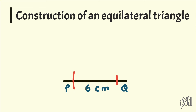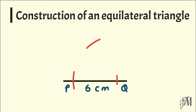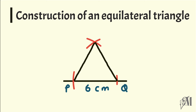Take your compass and keep it on one of the two points. First I keep it on Q and draw an arc, then with the same length I come to point P and cut the previous arc. Now I join these two points to the point of intersection of the two arcs and name that point as R. Here PR is equal to six centimeters and RQ is also equal to six centimeters, so all three sides are equal, making PQR an equilateral triangle.